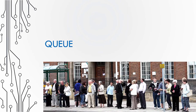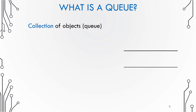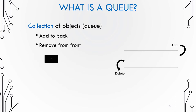In this video we are going to learn about what a queue is. In computer science, the queue is very similar to the real-world queue. A queue is a collection of objects stored in memory. Objects are always added to the back of the queue — just like joining a queue to buy a movie ticket. Objects are removed from the front of the queue.